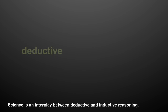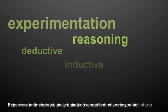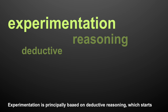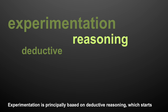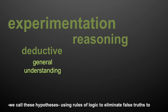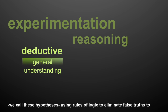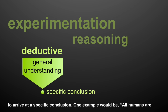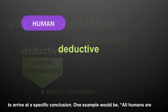Science is an interplay between deductive and inductive reasoning. Experimentation is principally based on deductive reasoning, which starts out with a general understanding of a phenomenon and examines the known possibilities — we call these hypotheses — using rules of logic to eliminate false truths in order to arrive at a specific conclusion.